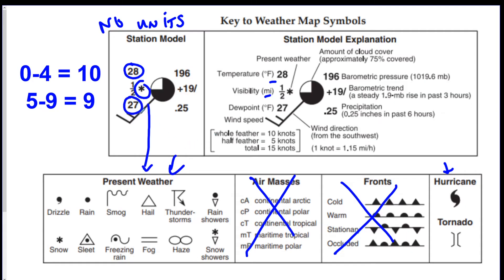This around here is the dew point, which is going to be in degrees Fahrenheit. This right here, this staff, is going to be the wind direction. And it's from the whatever the direction is. So this is from the southwest, which means the wind is blowing towards the northeast.